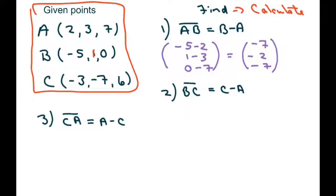And for the second one, this is going to be c minus b. So that's a b. So basically, that's just going to be three minus negative five, negative seven minus one, and six minus zero.